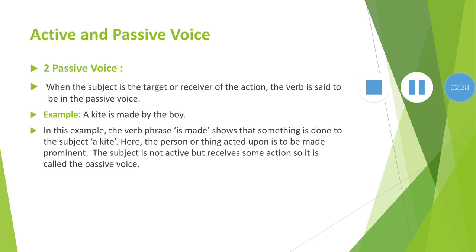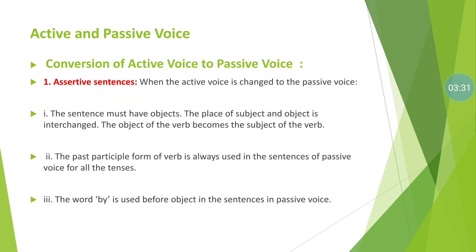In passive voice, when the subject is the target or receiver of the action, the verb is said to be passive. For example, 'A kite is made by the boy.' Here, the verb phrase 'is made' shows that something is done to the subject — 'a kite.' The person or thing acted upon is made prominent. The subject is not active but the receiver. When some action is done through the subject by a third person, such a verb is called a passive verb.